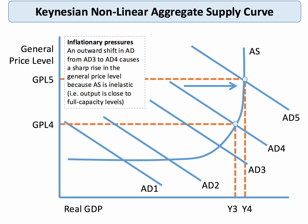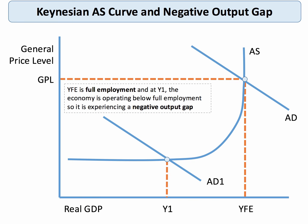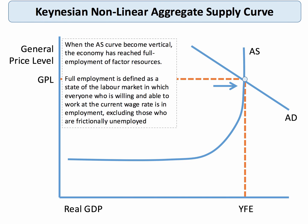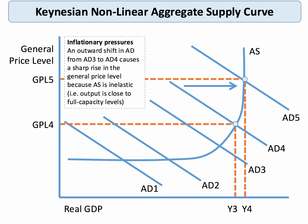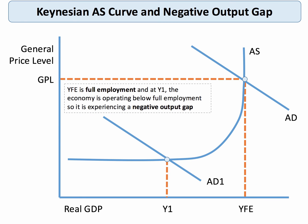Output is getting close to full capacity levels. So when the aggregate supply curve becomes vertical, the economy has reached full employment of factor resources — conventionally defined as when everybody who is willing and able to work has a job. YFE is full employment at Y1. The economy below full employment has a negative output gap. The key point is that as the economy moves towards full employment, the aggregate supply curve becomes more inelastic because the economy is running up against capacity constraints.